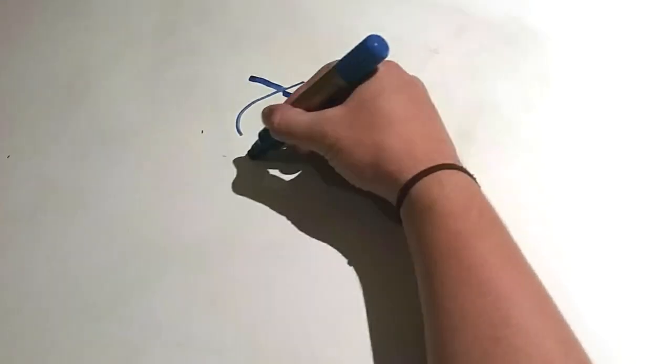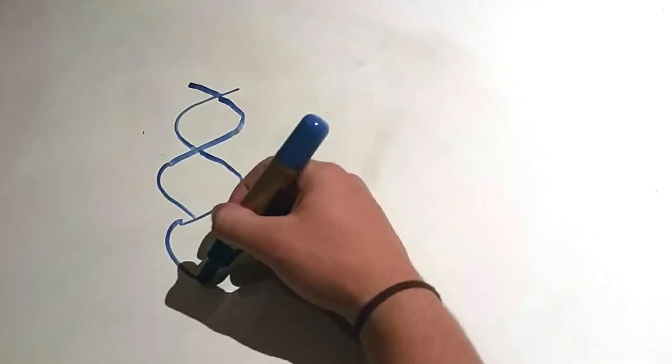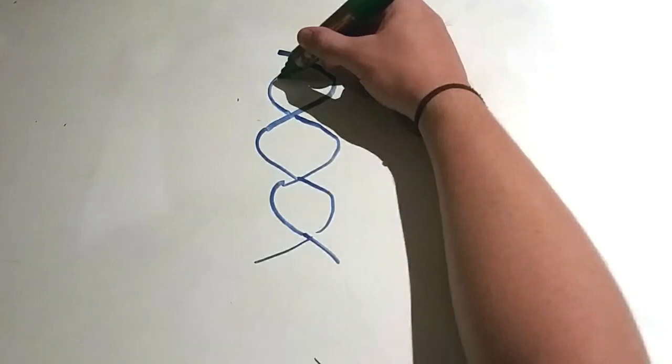Hybridization is the process of combining two complementary single-stranded DNA or RNA molecules and allowing them to form a single, double-stranded molecule through base pairing.